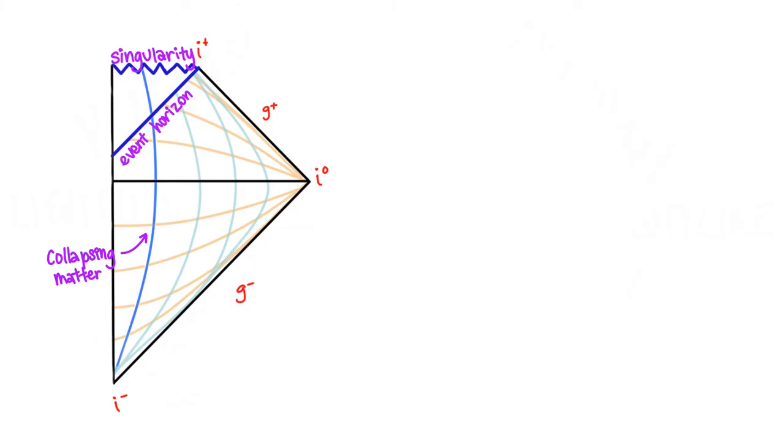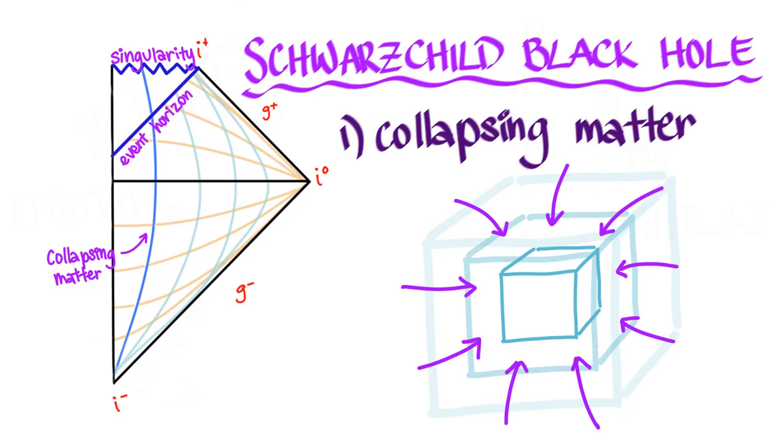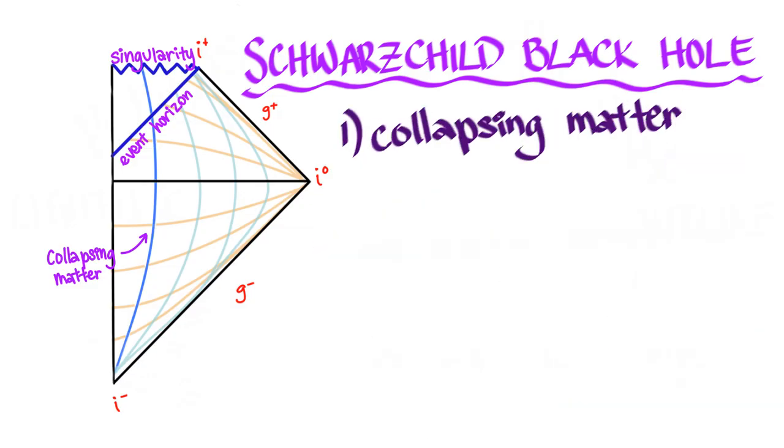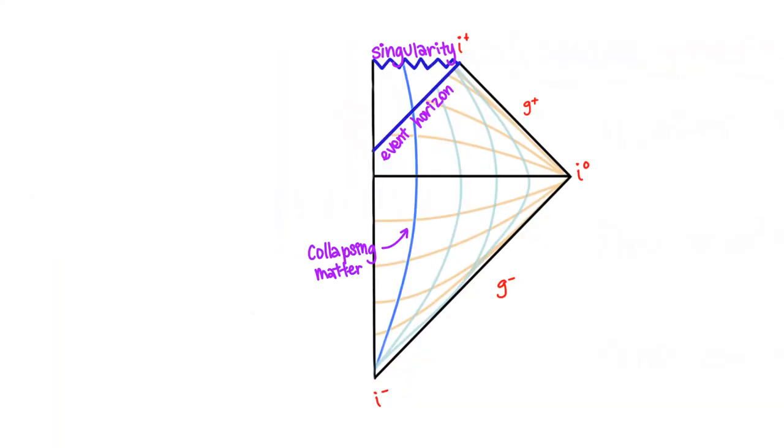Here is a representation of a Schwarzschild black hole on a Penrose diagram. The Schwarzschild black hole is one that is formed from collapsing matter. It has no angular momentum and no electric charge. They are far from realistic representations, but they are useful in terms of simplicity. Here is the event horizon, represented by a 45 degree boundary, and this is the singularity of a black hole.